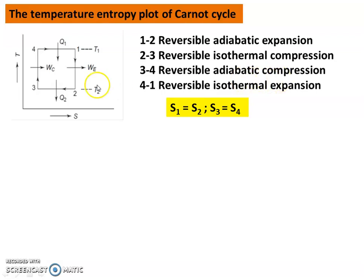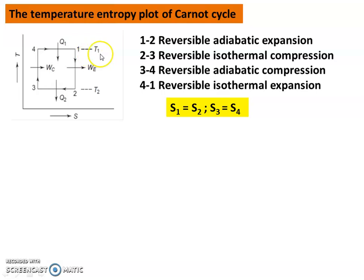Process 3 to 4 is Reversible Adiabatic Compression — entropy is constant, so S3 equals S4. Process 4 to 1 is Reversible Isothermal Expansion, where temperature is constant at T1. In this process, Q1 is the amount of heat supplied. All four processes are represented in the Temperature Entropy Diagram.